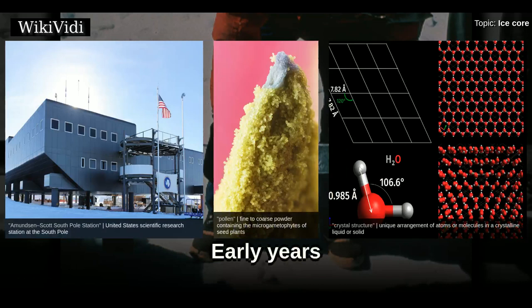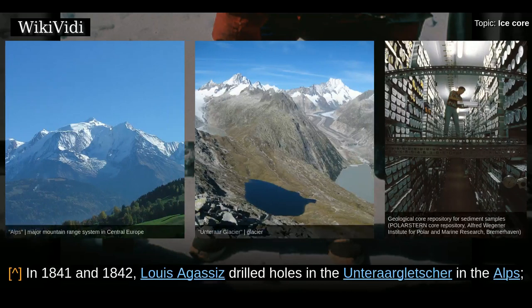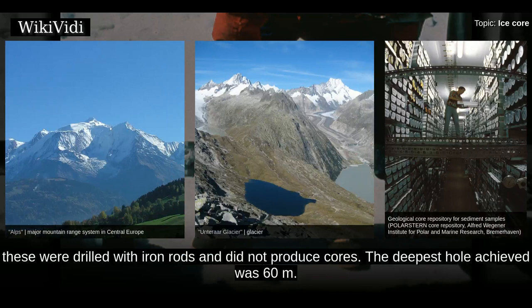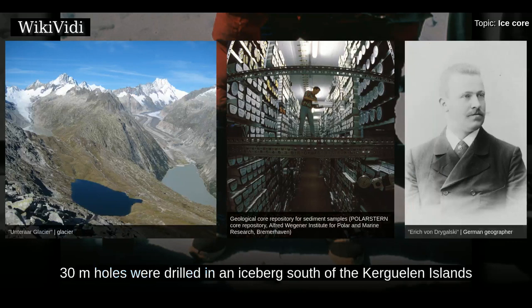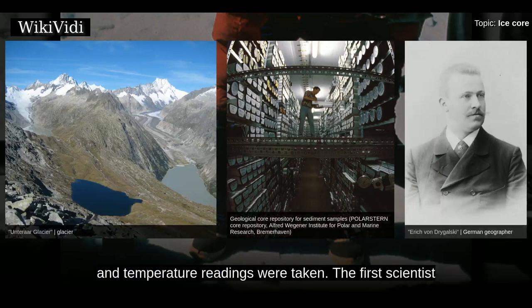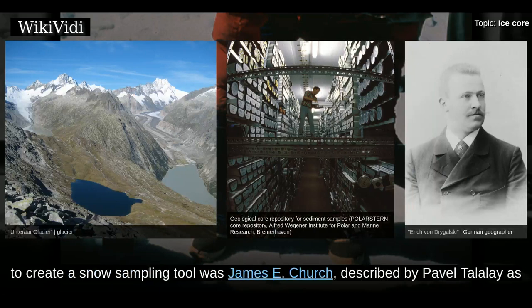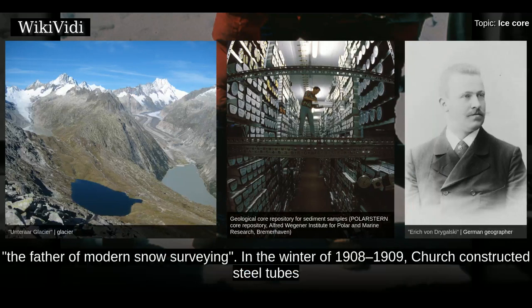In 1841 and 1842, Louis Agassiz drilled holes in the Aar Glacier in the Alps using iron rods, though these did not produce cores; the deepest hole achieved was 60 meters. On Erich von Drygalski's Antarctic expedition in 1902 and 1903, 30-meter holes were drilled in an iceberg south of the Kerguelen Islands and temperature readings were taken. The first scientist to create a snow sampling tool was James E. Church, described as the father of modern snow surveying.